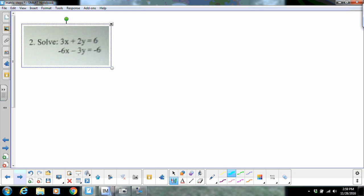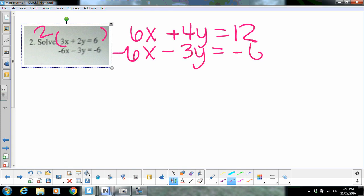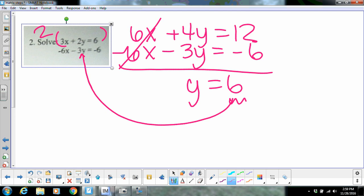All right, number two is just a system of equations. So we've already done these. I'm just going to set it up for you. I would multiply the top by two. That's going to give you 6x plus 4y equals 12. And now whenever you add these together, your x's will cancel, and you're going to get y equals 6. And then don't forget, you've just got to plug this back in to either one of these for y to get your x. And your ordered pair will have a y value of 6 and an x value of whatever you find.